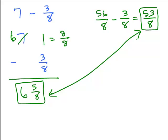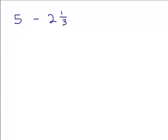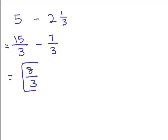Let's do another one — a whole number minus a mixed number: 5 minus 2 and 1 third. One way is to change both to improper fractions and get a common denominator. 2 and 1 third becomes 7 thirds. Then write 5 with a denominator of 3: 5 times 3 is 15, so 5 equals 15 thirds. Then 15 thirds minus 7 thirds is 8 thirds, which as a mixed number is 2 and 2 thirds.